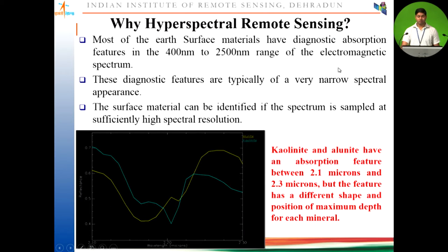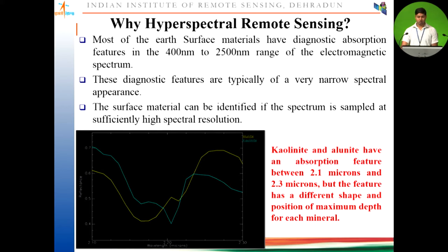Why is hyperspectral remote sensing able to identify different types of spectrally similar features? The energy levels absorbed at particular wavelengths create absorption features, which distinguish various features. For example, two minerals — kaolinite and alunite — show particular absorptions at specific wavelengths, allowing you to distinguish between them. The types of absorptions taking place during data acquisition are what enable this separation.